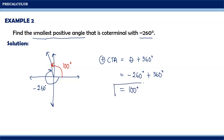Therefore, the smallest positive angle that is coterminal with negative 260 degrees is the angle that measures 100 degrees.